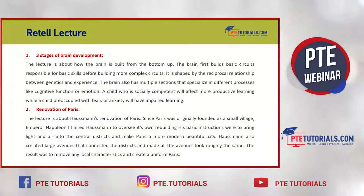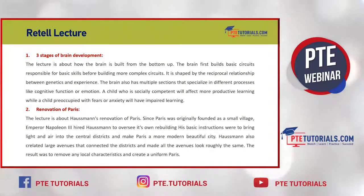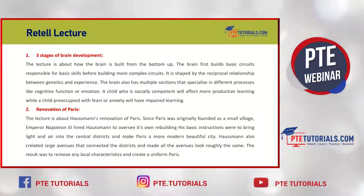The answer is: Three Stages of Brain Development. The lecture is about how the brain is built from the bottom up — keywords: brain, bottom up. The brain first builds basic circuits responsible for basic skills before building more complex circuits — keywords: basic circuits, basic skills, complex circuits. It is shaped by the reciprocal relationship between genetics and experience — keywords: reciprocal relationship, genetics, experience. The brain also has multiple sections specializing in different processes like cognitive function or emotion. A child who is socially competent will have more productive learning, while a child preoccupied with fears or anxiety will have impaired learning — keywords: socially competent, productive learning, preoccupied, fears, anxiety, impaired learning.